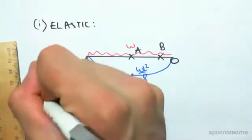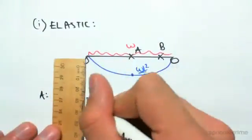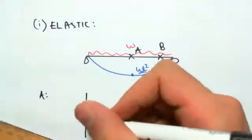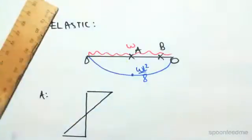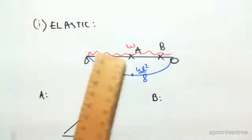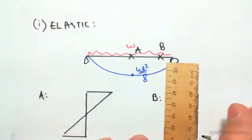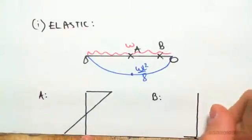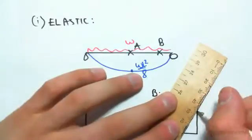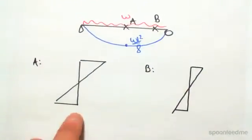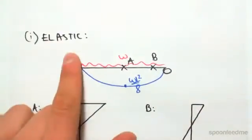So the stress diagram for A will look something like this. So it's linear because it's still elastic, and we're going to get a stress diagram like that. At point B, it's also linear, but the stress is going to be a little bit lower. Because the bending moment is smaller, it means the stress is smaller. But you can see that they're both linear, which means that it's elastic.